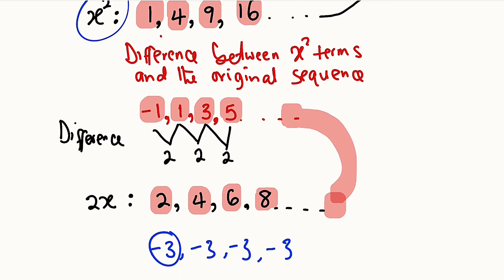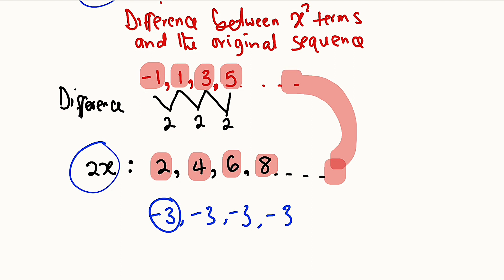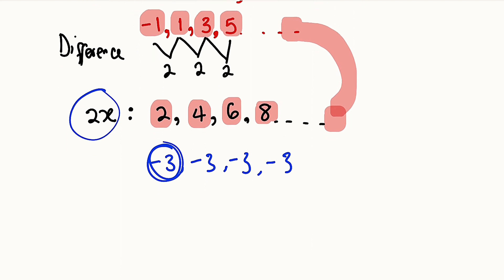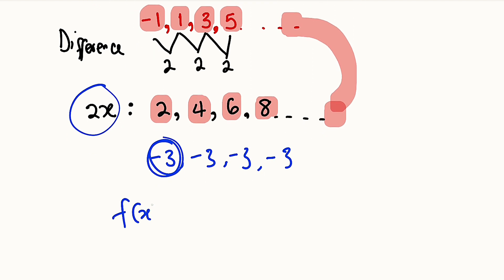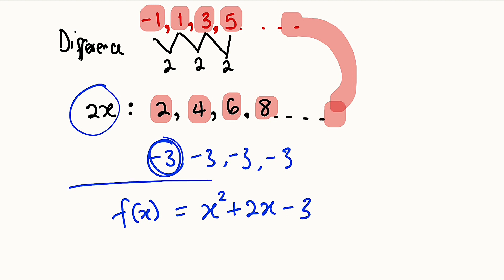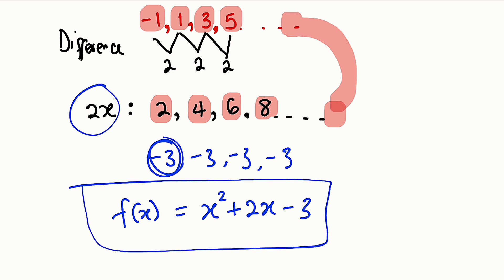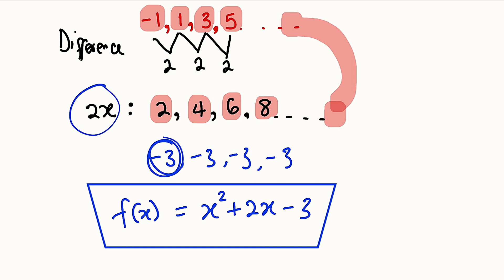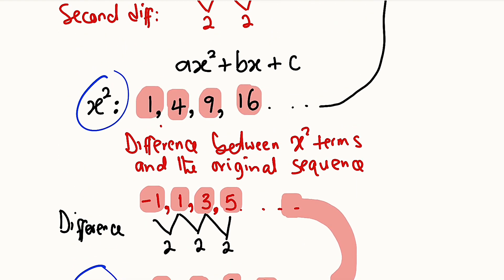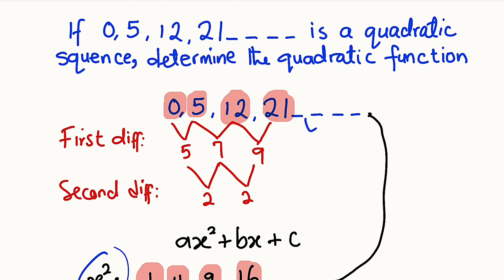Our quadratic function is f(x) = x² + 2x − 3. This is the solution to the problem, but let us confirm whether this quadratic function really does produce the original sequence.